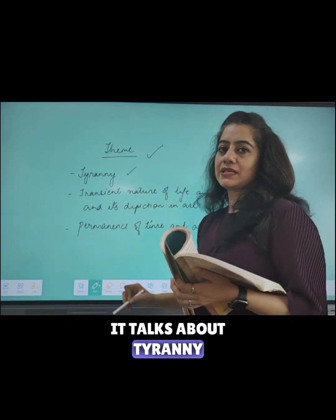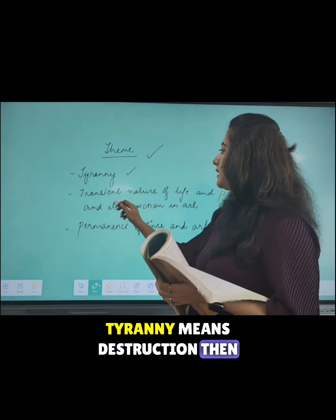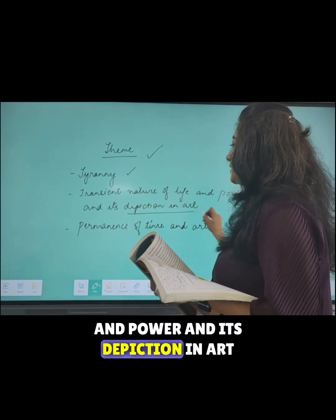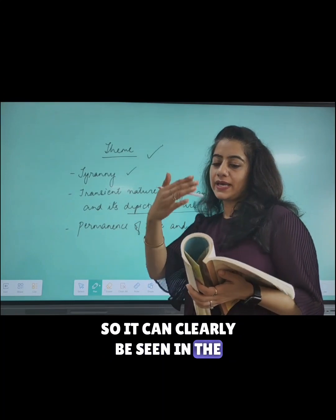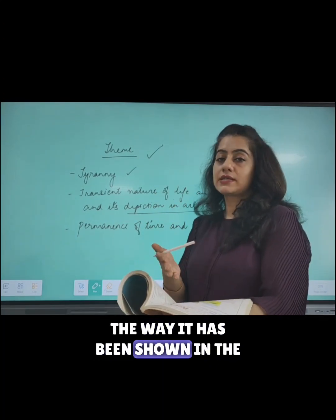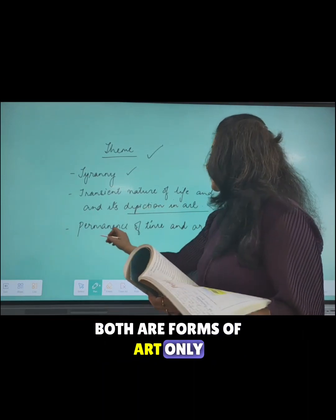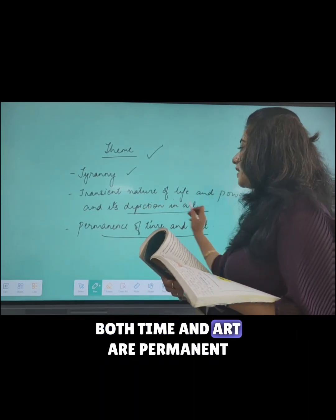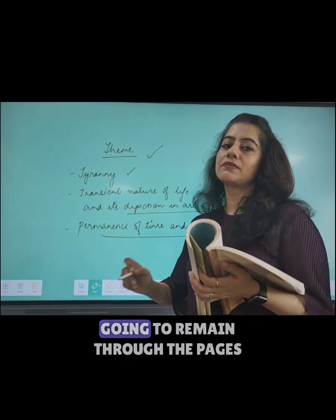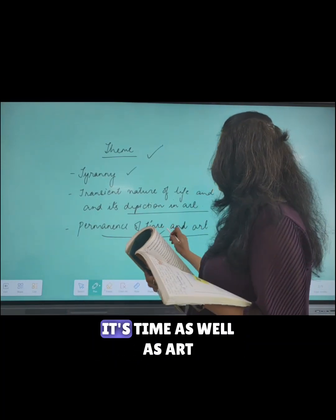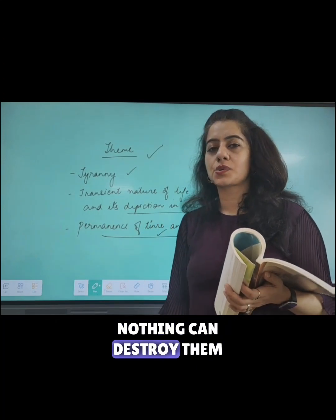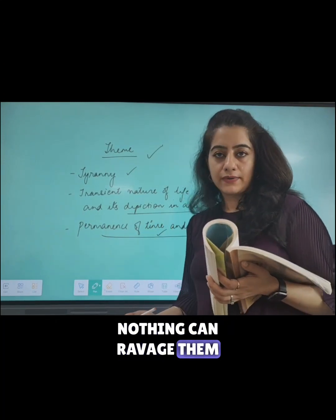It is a very ironical end to the poem. The themes of this sonnet include: tyranny, the transient nature of human life and power, and power and its depiction in art. Time and art are permanent through the pages of history — if there is something that will remain, it is time as well as art. Nothing can devastate, destroy, or ravage them.